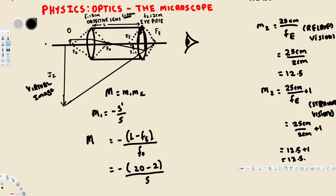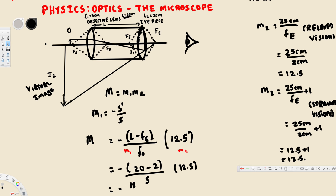Using relaxed vision, we multiply M1 by M2 equals 12.5. So M equals negative 18 over 5 times 12.5. Since 18 over 5 equals 3.6, we get negative 3.6 times 12.5, which equals negative 45. This means the image is 45 times larger than the object, and the negative sign indicates it is a virtual image.